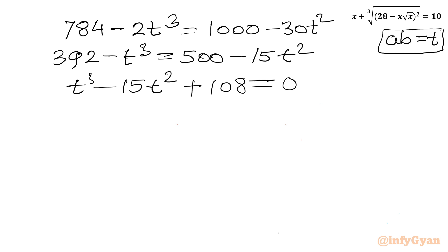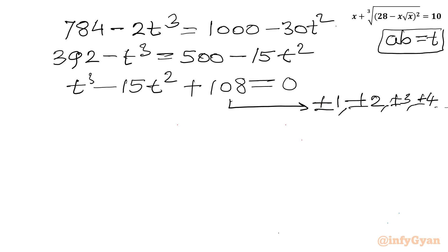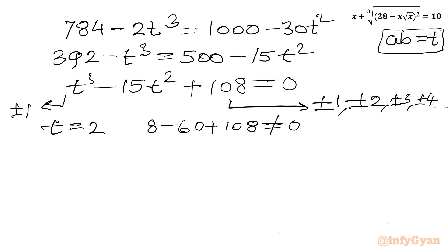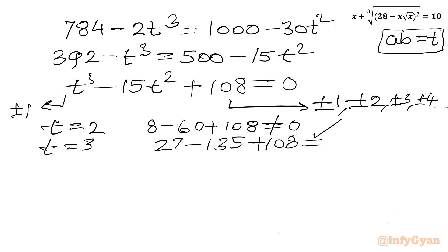Now we use the rational root theorem. The eligible factors of the constant term 108 include ±1, ±2, ±3, ±4, and so on, with leading coefficient ±1. Testing t = 3: 27 minus 135 plus 108 equals 0. Yes! So t equals 3 is our integer solution.